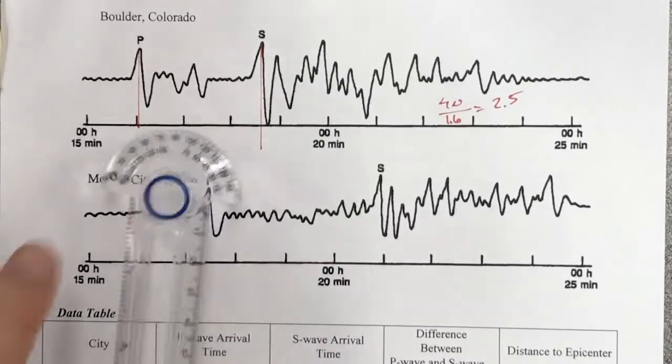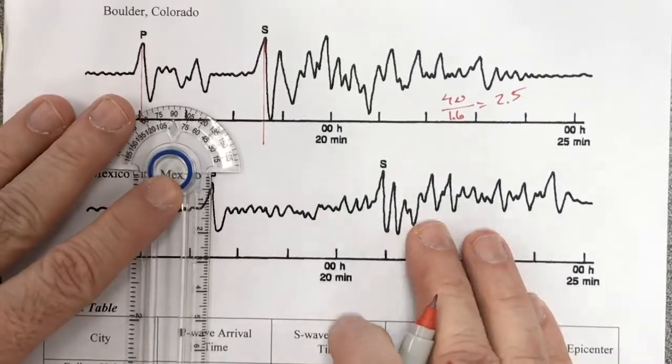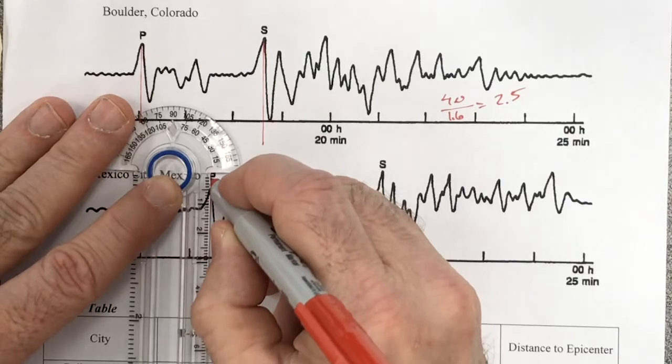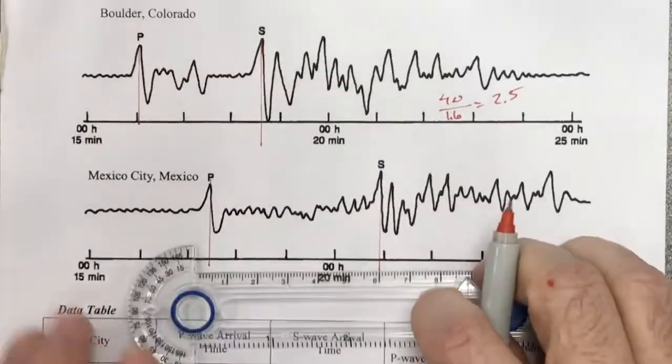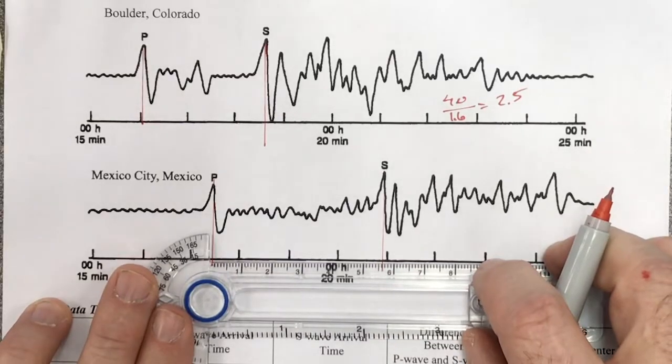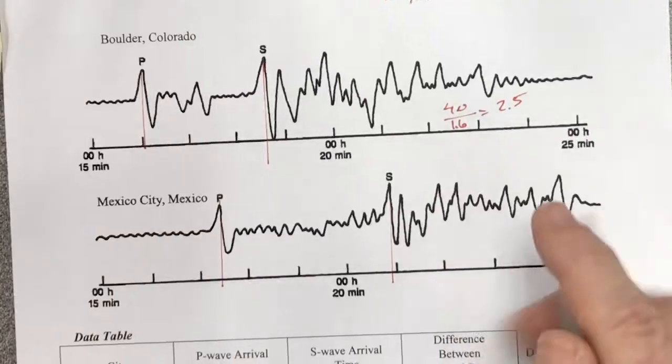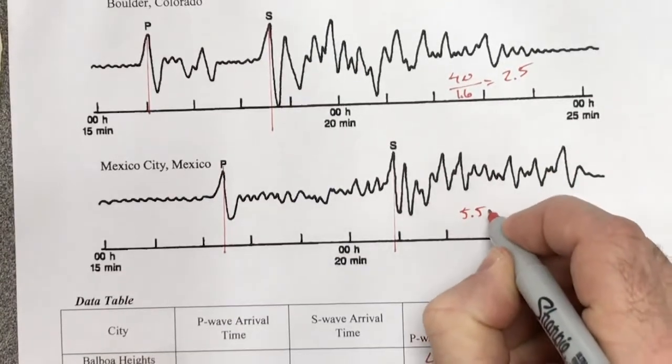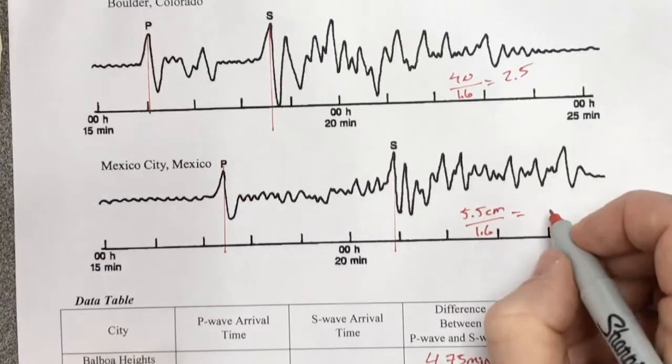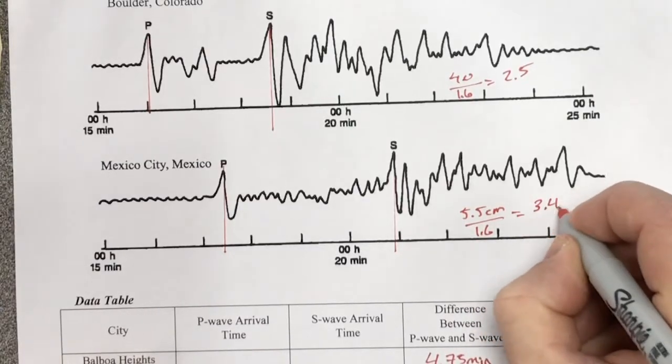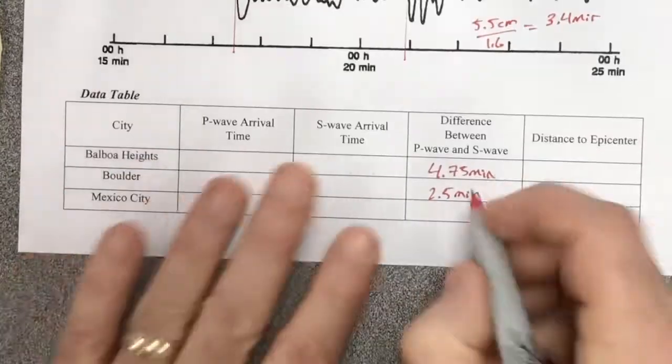Do the same thing now for Mexico City. P and S. I then find the distance between here and here. And I get, it looks like it's 5.5. So I say 5.5 centimeters divided by 1.6. And I've got the calculator. That comes out to 3.4 minutes. I'm going to put that here.